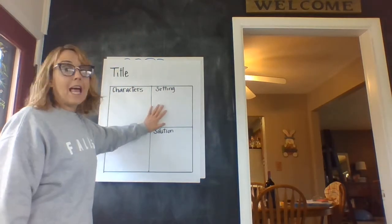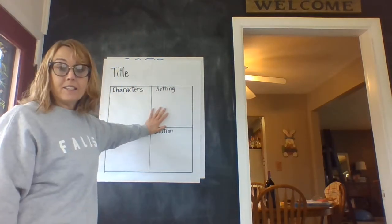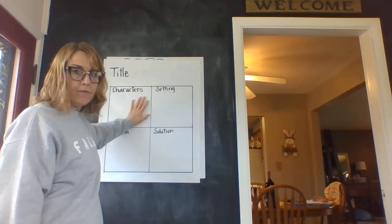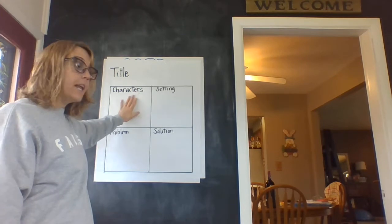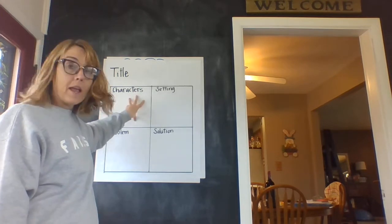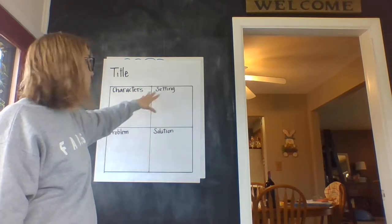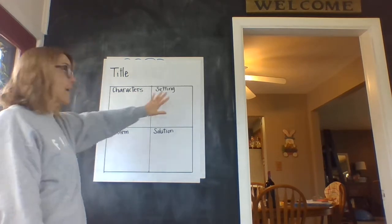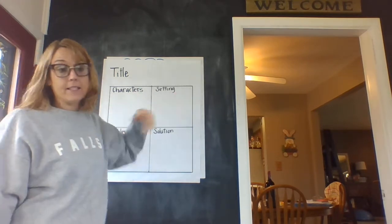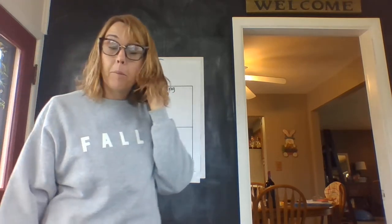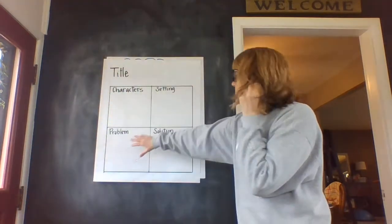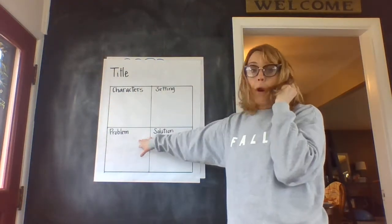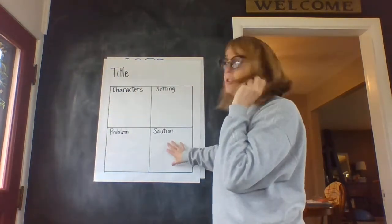So last time we talked about Knuffle Bunny and Trixie and all that. Today we have a whole family and a little girl. We know the setting — it's in a city in an apartment building. And then we have a problem and a solution.